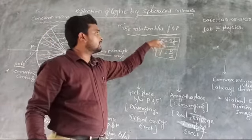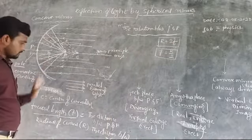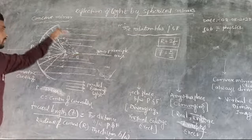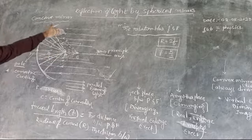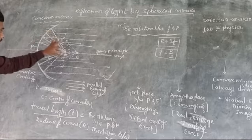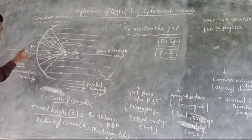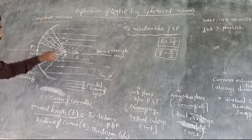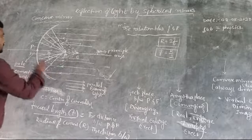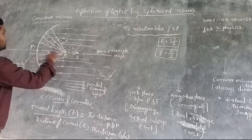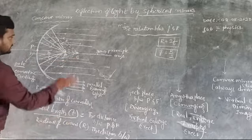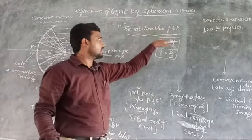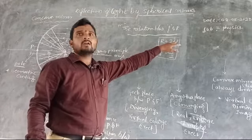Here is the important formula — the relation between focal length and radius of curvature. The radius of curvature R is always equal to twice the focal length, because F plus F equals 2F. Therefore, R equals 2F, and also F equals R divided by 2. This is the relation between R and F — the radius of curvature and the focal length.